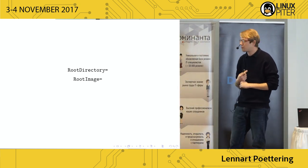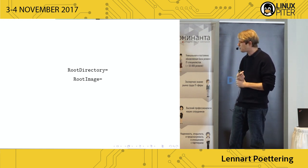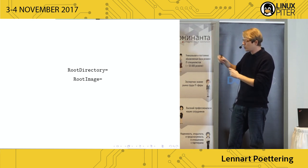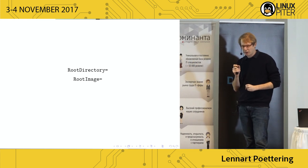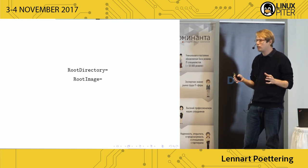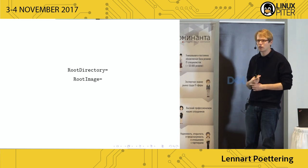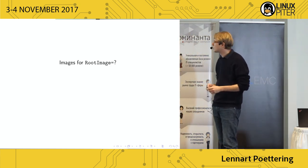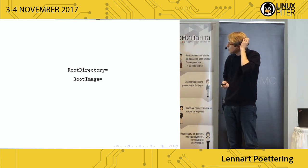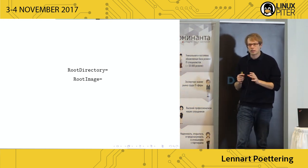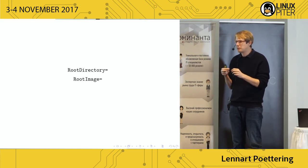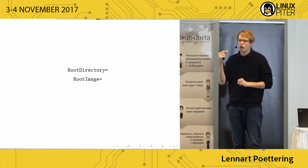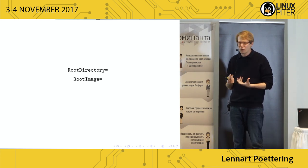There's another concept in systemd: RootImage. With RootDirectory you specify a directory as the root. RootImage does the same but for a filesystem image — a file that contains a filesystem, the same thing you can DD onto a USB stick, basically using a loopback device with MKE2FS or whatever filesystem you choose. These are unit file settings — unit files are how you configure systemd and describe the units it manages, and these settings apply to service units.